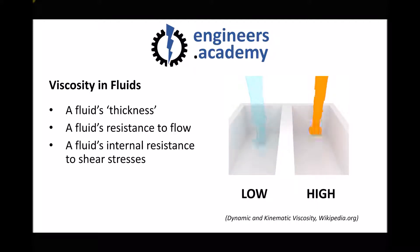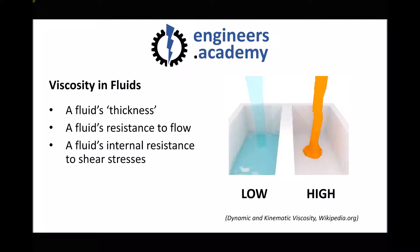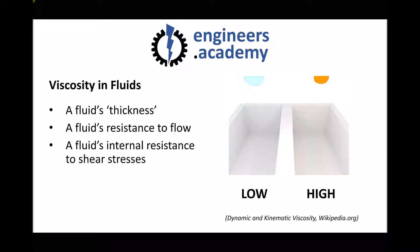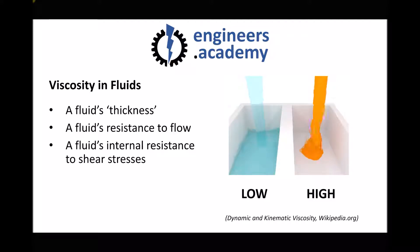When a fluid flows through a pipe we get internal stresses as a result of friction with the surface of the pipe. So the reason a high viscosity fluid is more resistant to flowing through a pipe is because it's more resistant to those internal stresses.